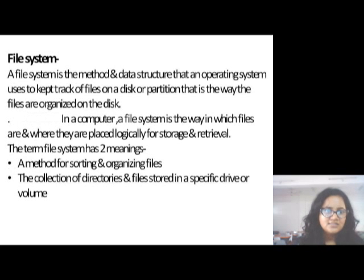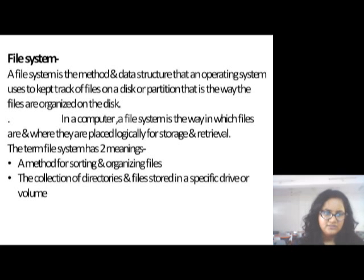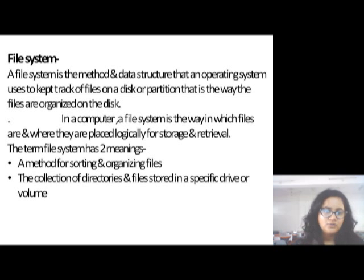A file system is the method and data structure that an operating system uses to keep track of files on a disk or partition — it is the way the files are organized on the disk. In a computer, a file system is the way in which files are placed logically for storage and retrieval. The term file system has two meanings: first, a method for sorting and organizing files, and second, the collection of directories and files stored on a specific drive or volume.